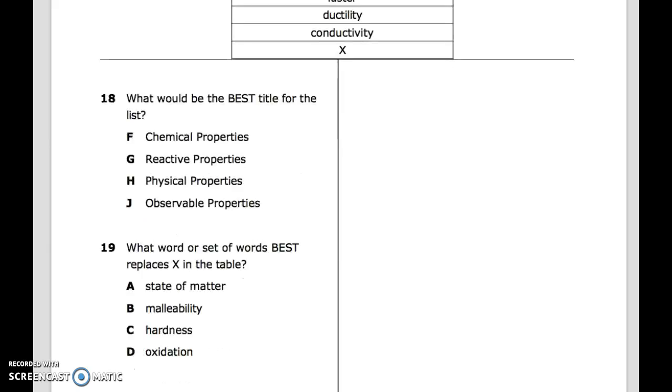19: What word or set of words best replaces X in the table? A. State of Matter. B. Malleability. C. Hardness. D. Oxidation.